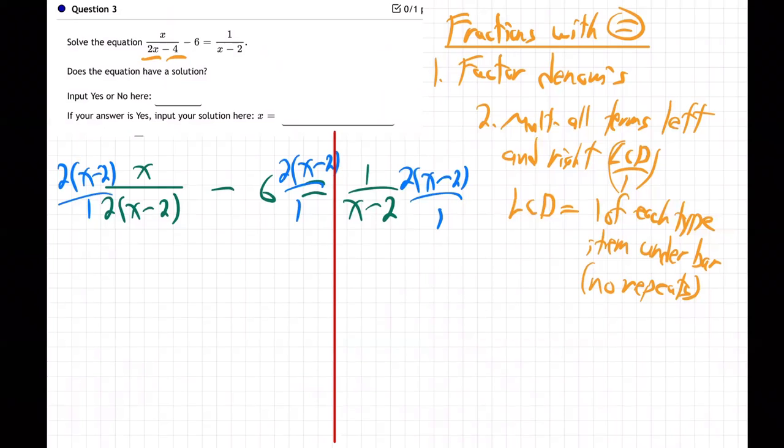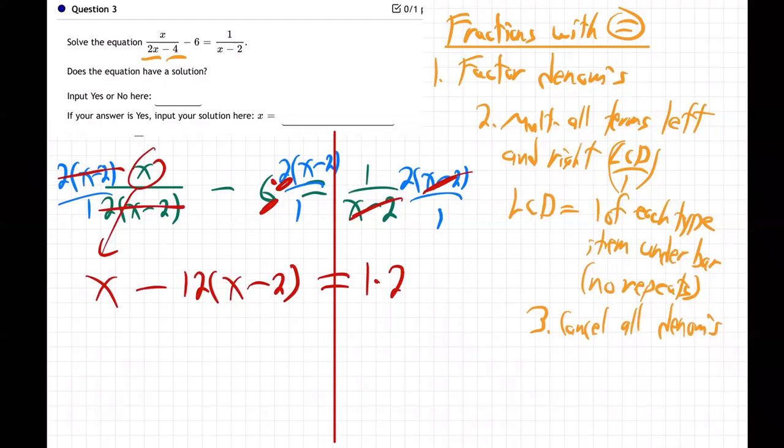And then the next step, right? Step 3. Cancel all denominators. So I'm going to cancel 2 and x minus 2. And what does that leave? Just x minus. What happens here? 6 times 2 is 12, x minus 2. So 6 times 2. And then here, cancel the x minus 2. And we just have 1 times 2 or just 2. So then I'm going to distribute this minus 12. Minus 12x plus 24. 1 times 2 is just 2. Is that making sense? Negative 12 times negative 2 made plus 24.